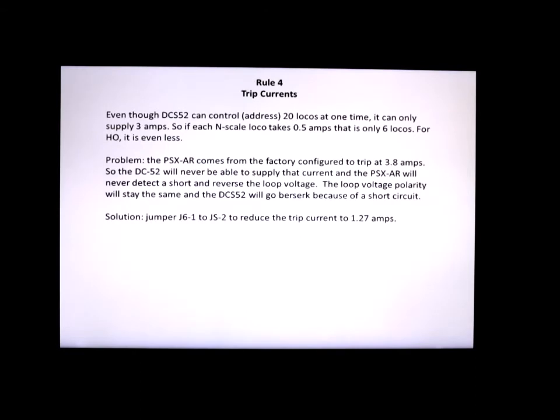So the problem is that the auto reverser comes from the factory configured to trip at 3.8 amps. Well, if the DCS-52 can only supply 3 amps, the auto reverser will never see a short of 3.8 amps or more, and it'll never reverse the loop voltage, so it won't work. So what's the solution to this? In order for the auto reverser to reverse, we reduce the trip current of the auto reverser to 1.27 amps. The way we do that is we put a physical jumper between terminals 1 and 2 on J6, and that'll reduce the trip current to 1.27 amps. You can go anywhere from 1.27 amps, depending on the jumpers, up to 19 amps trip current. You can also do this in software, but from my perspective, it's easy just to throw up a physical jumper across J6 on those two terminals 1 and 2, and that'll solve the problem.